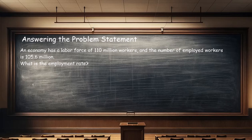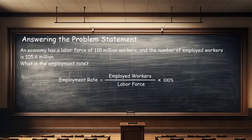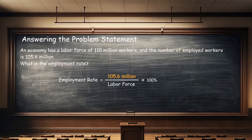Now let's find a solution to the problem statement using the process outlined in the previous section. First, write the formula for the employment rate. For this example, let's use the percentage formula: employment rate equals the number of employed workers divided by the labor force times 100%. Second, from the problem statement, substitute the number of employed workers into the formula. The number of employed workers is 105.6 million, so let's substitute 105.6 million into the formula.